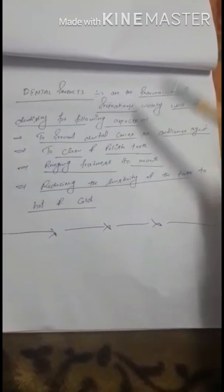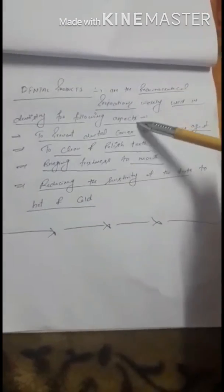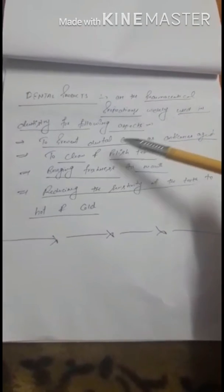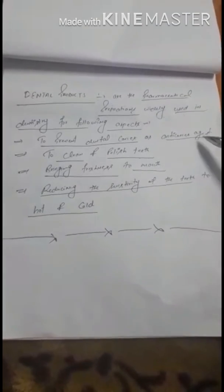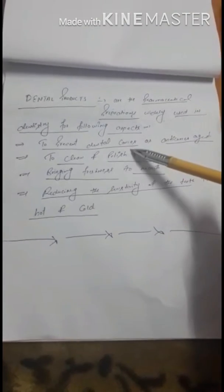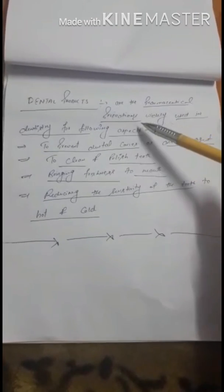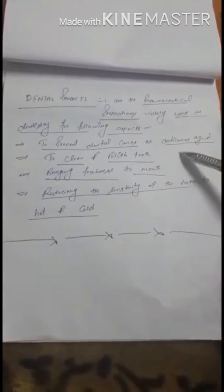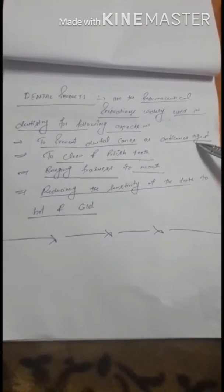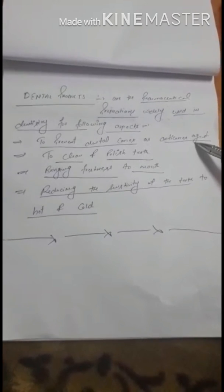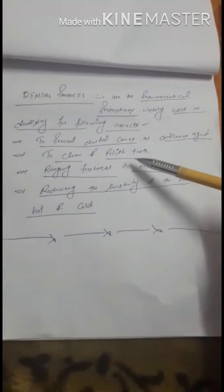Now, what are the various aspects of dental products and why it is very important to use dental products? The first aspect is to prevent dental caries as an anti-caries agent. Dental caries means tooth decay, and we can use dental products to prevent it. An anti-caries agent is an agent that prevents tooth decay and dental caries.